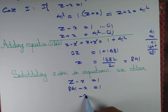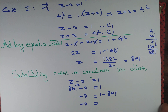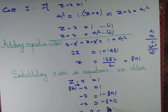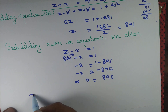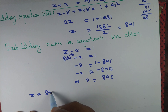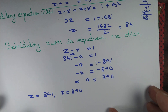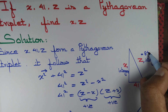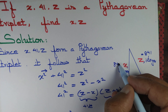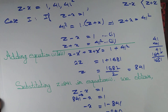Moving the variable to the left hand side and numbers to the right hand side: minus x equals 1 minus 841, so minus x equals minus 840, and cancelling the negative sign gives x equals 840. So in Case 1 we have determined z equals 841 and x equals 840.